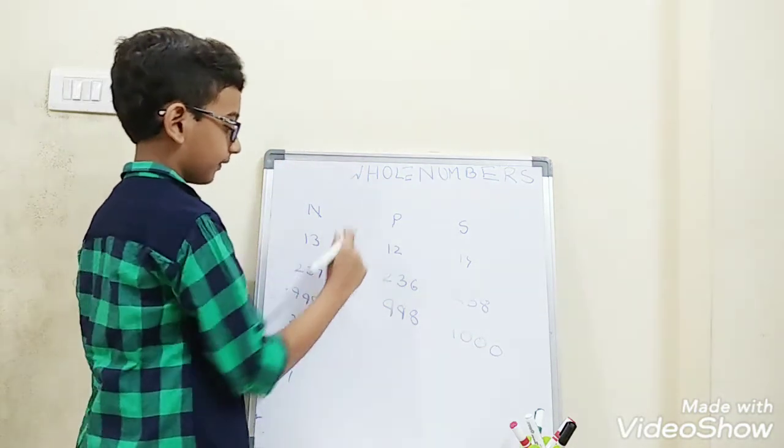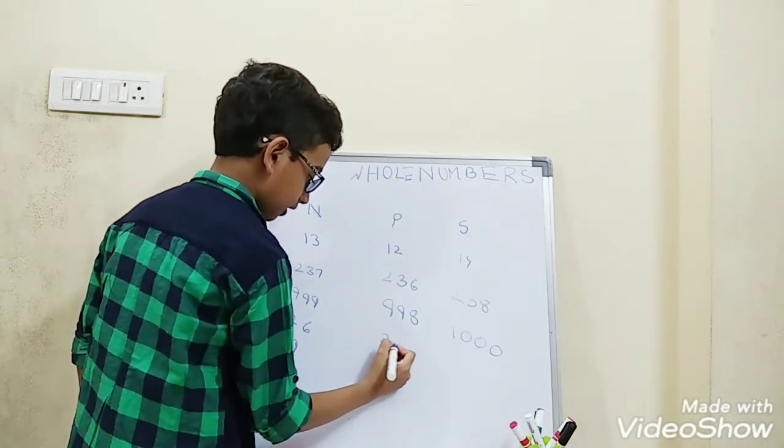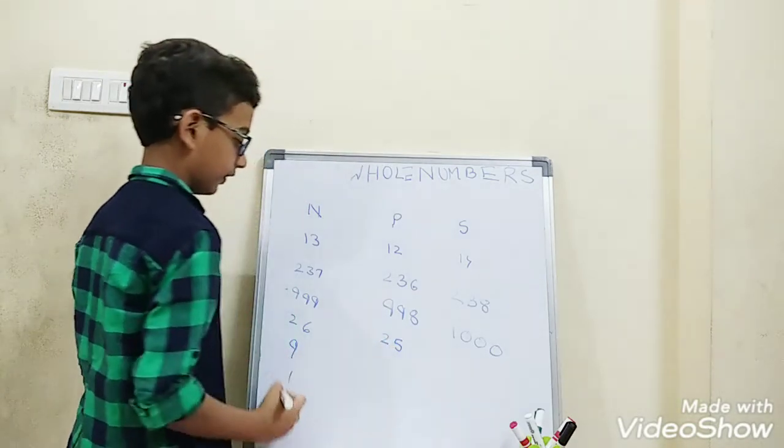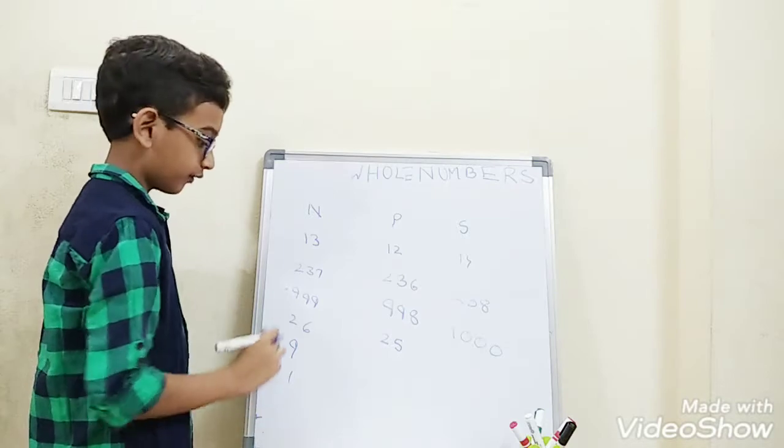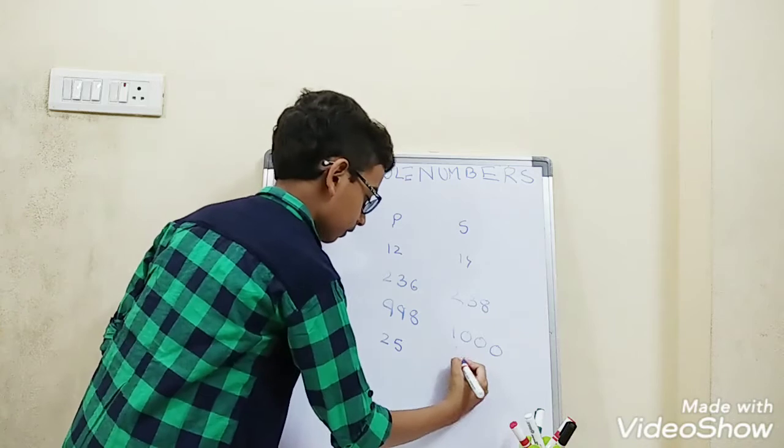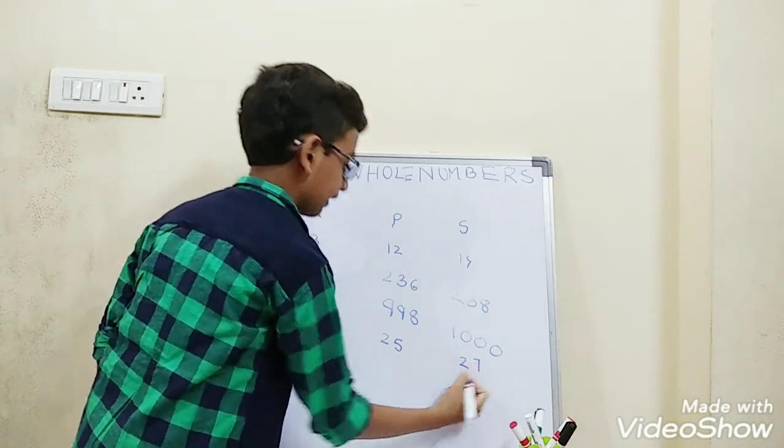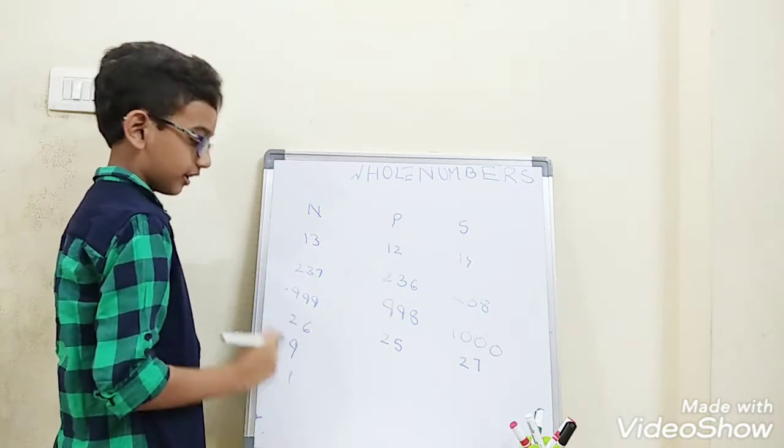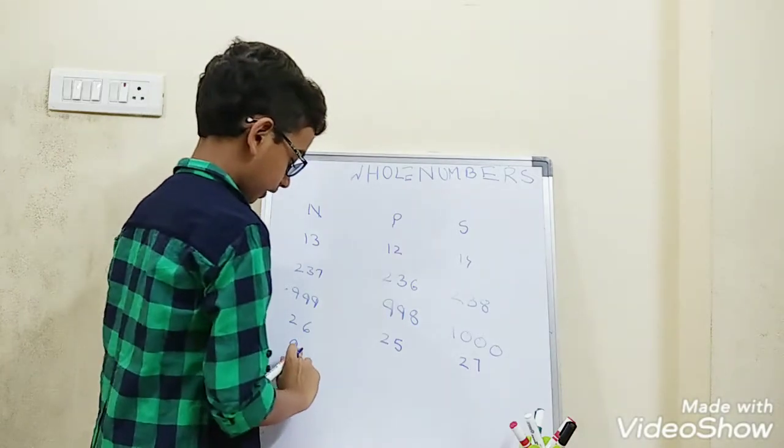26. 26's before number is 25, means the predecessor of 26. 26's successor is 27, 6 after 7.